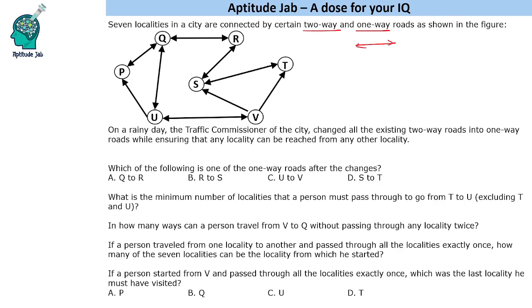If you see double lines or double arrows, that means it is a 2-way road, and if you see a single sided direction, that is a 1-way road.